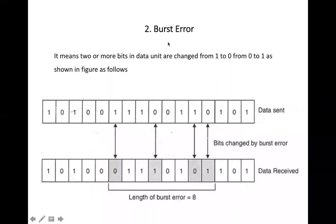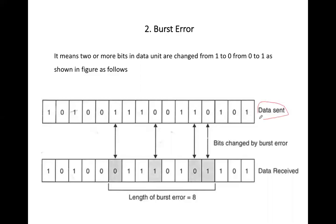The second type of error is called burst error. Burst error means the change of multiple bits. For example, suppose this is the data sent — we can number the bits as 1 through 16. When we compare the sent and received data, multiple bits across a range have been changed.